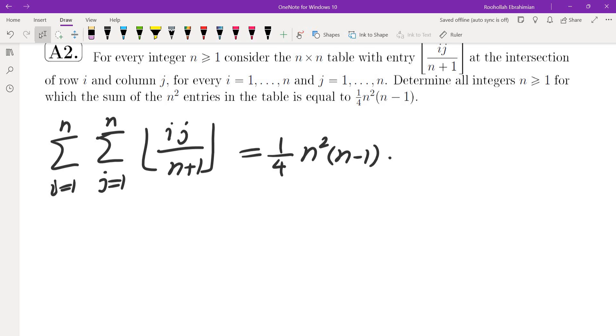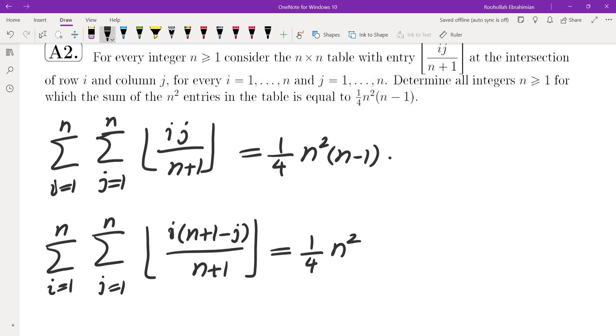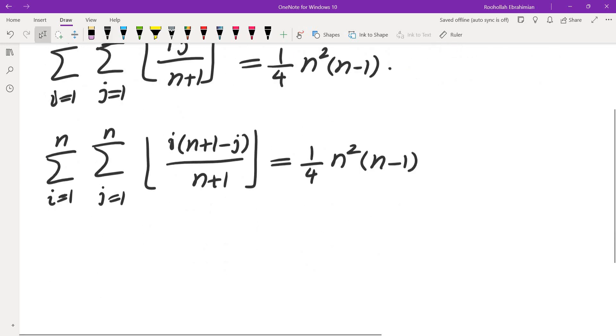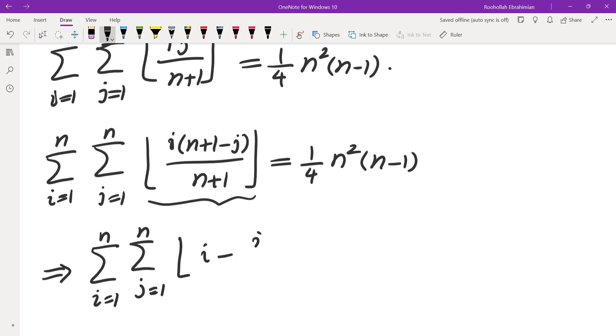One thing you could do is change the order of summation. Instead of evaluating it from 1 to n for j, I will evaluate it from n to 1. I'm going to replace j by n plus 1 minus j. This is going to be the exact same sum when j equals 1, n plus 1 minus j is n, and when j equals n, n plus 1 minus j is 1. The nice thing about this is that if you simplify this, it becomes i minus ij over n plus 1. And that's the exact same sum, 1 fourth n squared times n minus 1.